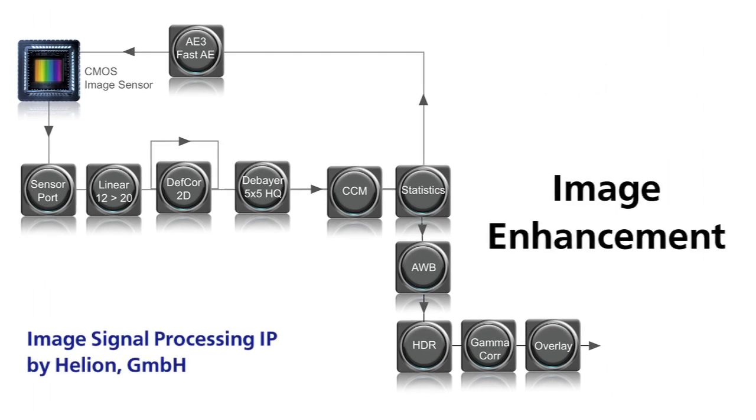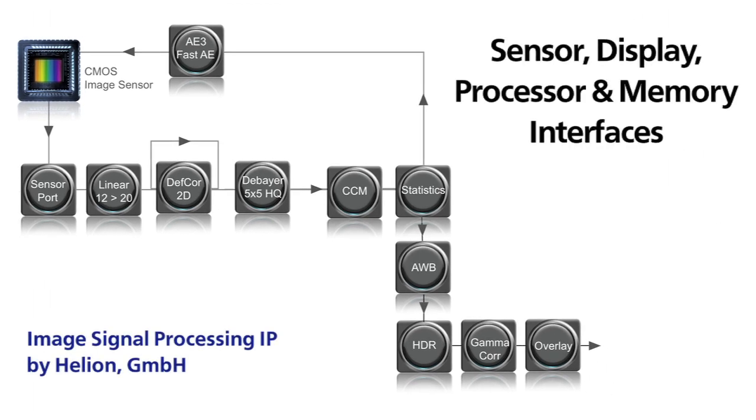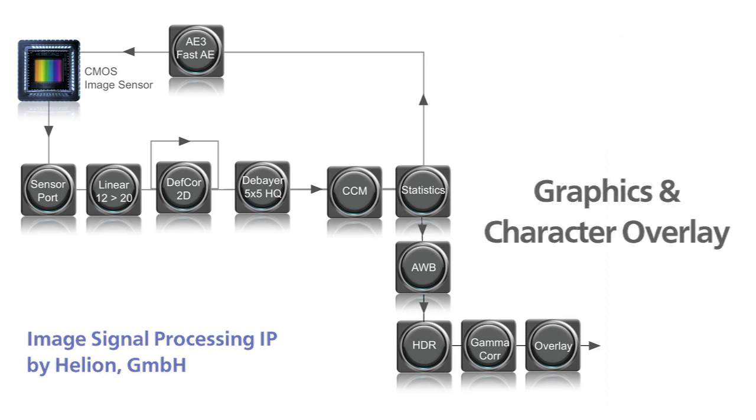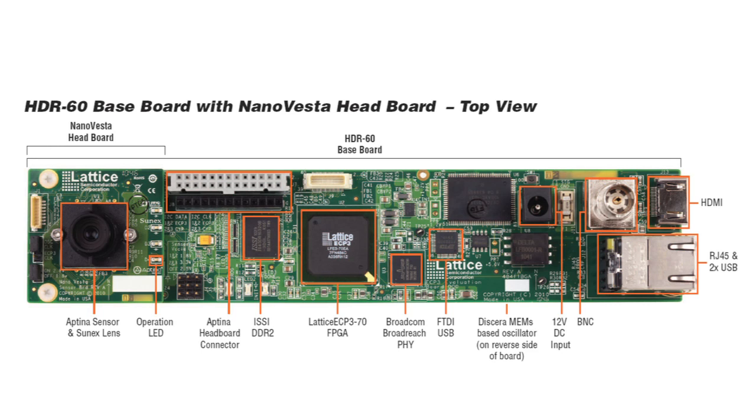Such as color pipeline rendering, image enhancement, sensor, display, processor, and memory interfaces, and graphics and character overlays. The intellectual property is all wishbone bus compatible and is easy to interconnect to construct your own custom image processing pipeline.